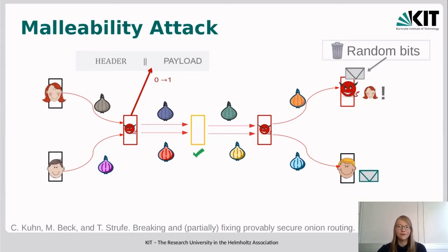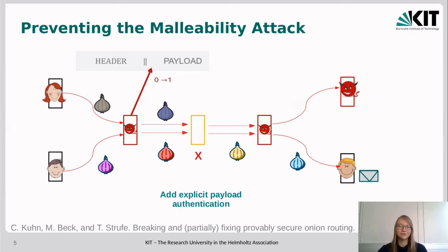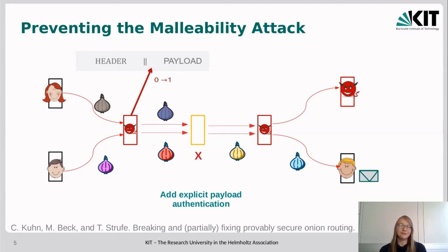To prevent this attack for the case where Alice just wants to send a message to the receiver, we can simply add protection for the payload. Because Alice knows the message, she can pre-calculate how the payload has to look at each part of the path, and then she can explicitly authenticate the payload with a message authentication code. This leads to the honest relay dropping the modified onion, realizing somebody tampered with the payload. As a result, Alice's message is not forwarded, and the adversary does not learn to whom it was addressed.